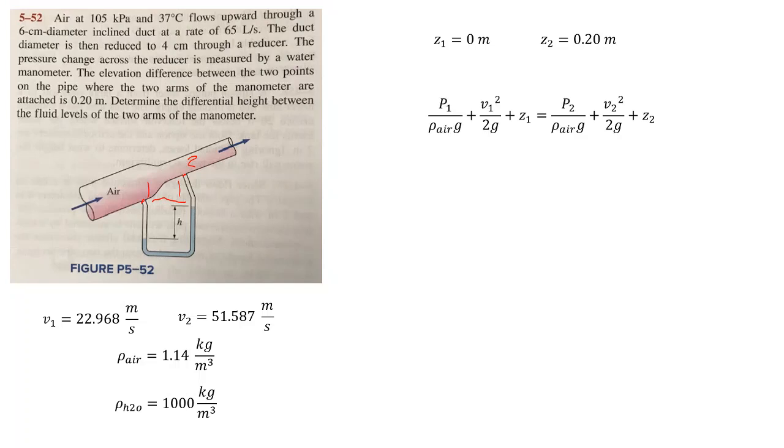We're going to use Bernoulli's equation. There's a couple different forms here. This is a form that I like to use where we have P1 over rho g plus v1 squared over 2g plus z1, and that's constant. So that's equal to basically the same terms at a second location.